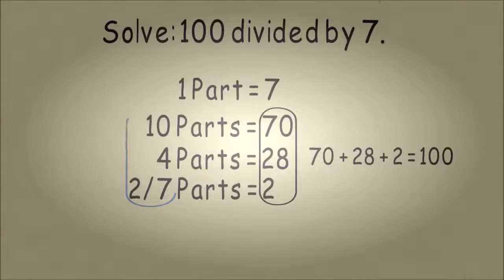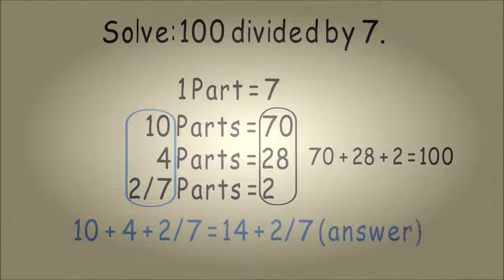To get our quotient, we add up the number of parts. We have 10 parts, 4 parts, and 2 seventh parts, which gets us to our answer of 14 and 2 sevenths. And there you go. This is an easy way to divide numbers, and you don't have to use long division.